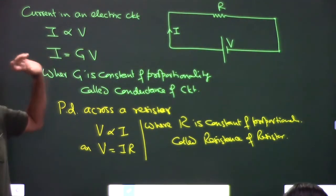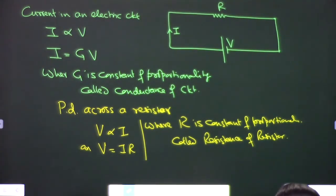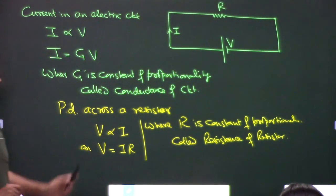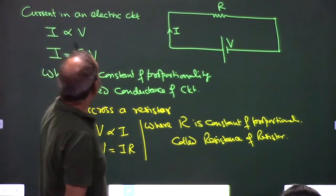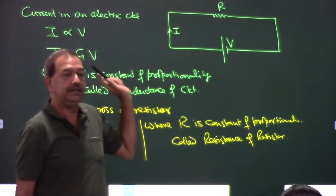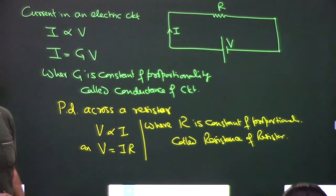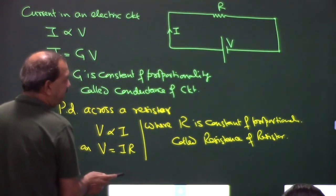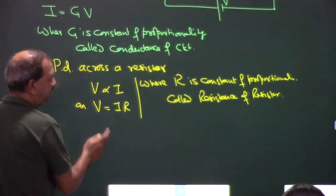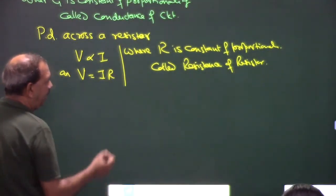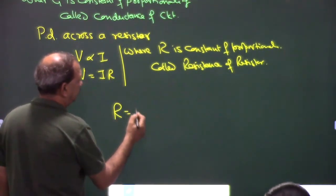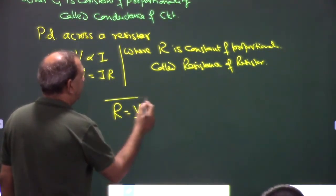I proportional to V is used when talking about the complete circuit, and V proportional to I when talking about a particular resistor — the potential difference across a resistor vs. current in the electric circuit. This is simple Ohm's law, and from it R = V/I. This is the definition of resistance.